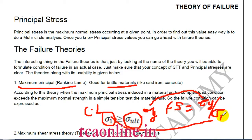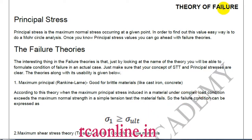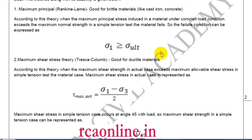In the factor of safety, anything related to the simple test comes at the top and complex loading always comes at the denominator. This simple theory says: compare the maximum principal stress with the yield value. If maximum principal stress is greater than or equal to yield, failure takes place; if less, the material is safe. This theory was given by Rankine.